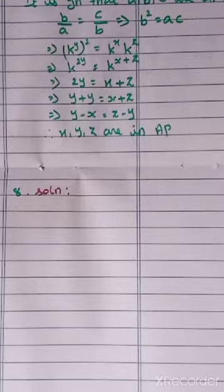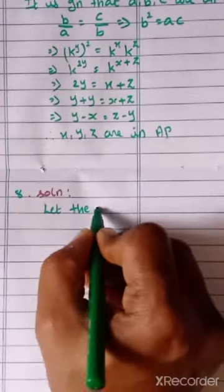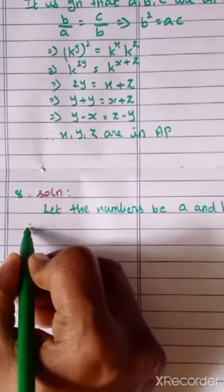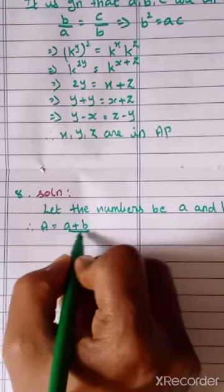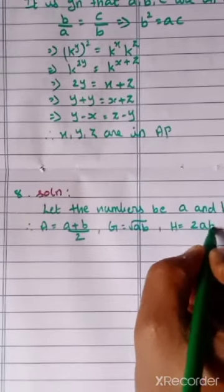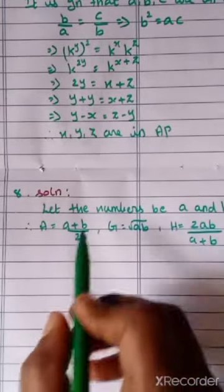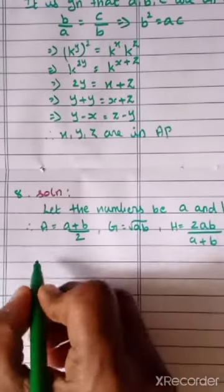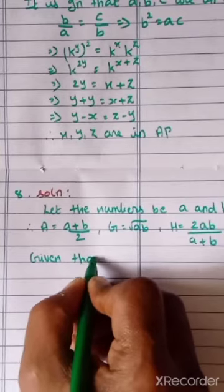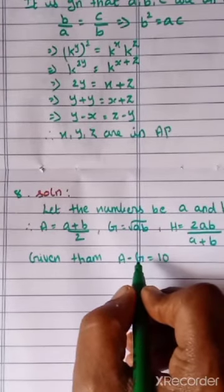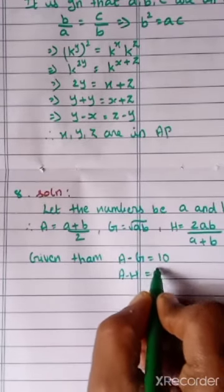Solution. Two numbers are there, so let the numbers be A and B. What is the AM condition? A equals A plus B by 2. What is GM? GM is root of AB. What is HM? HM is 2AB by A plus B. It is given that AM exceeds GM by 10, so A minus G equals 10. And also exceeds HM by 16, so A minus H equals 16.